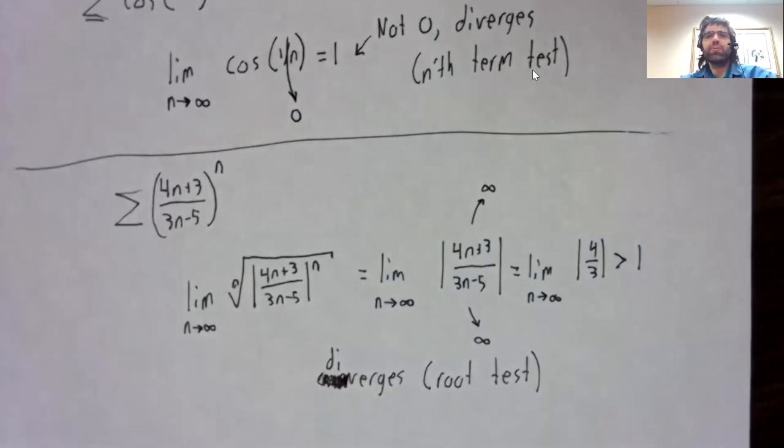If it were between zero and one, the series would converge absolutely. If the limit were equal to one, the test fails. So just like the ratio test.